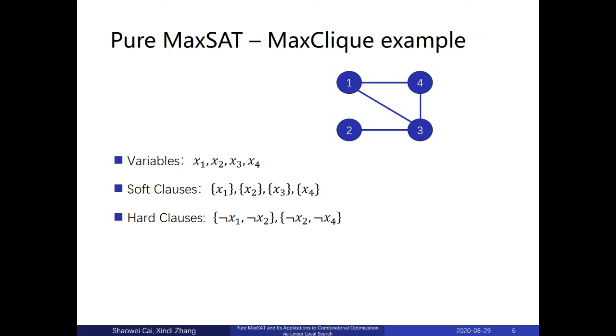Let's look at this small example. When we're encoding MaxClique into MaxSAT, it happens to be a Pure MaxSAT formula. For this graph, we have four vertices, 1, 2, 3, 4, which corresponds to four variables in MaxSAT: x1, x2, x3, x4. And we have two hard clauses, and all literals are negative literals. For example, for this hard clause, it says that vertex 1 and vertex 2 cannot be selected in a clique at the same time because they don't share an edge. Look at this example. All hard clauses have negative literals, and all soft clauses only have positive literals. So it is a Pure MaxSAT problem.